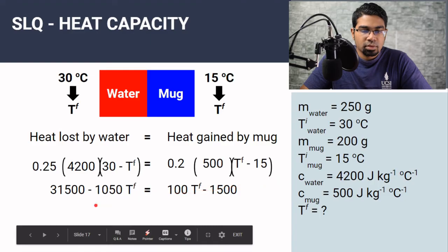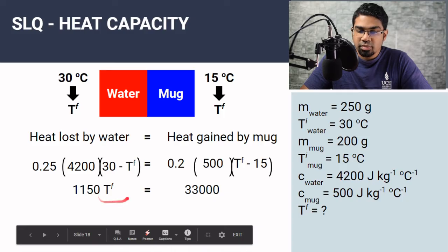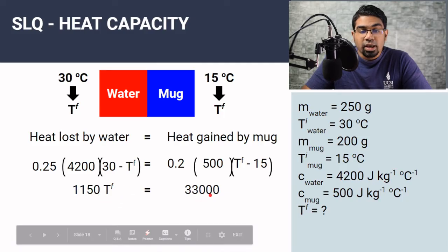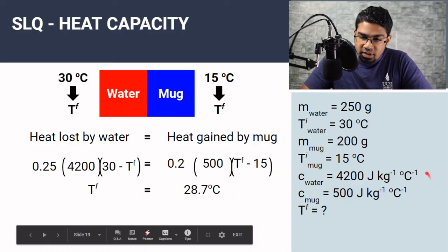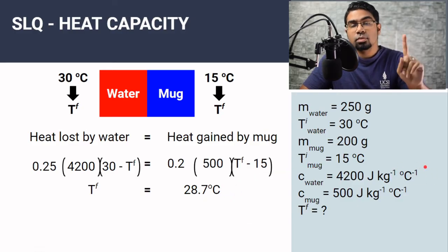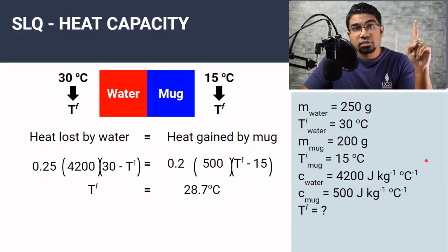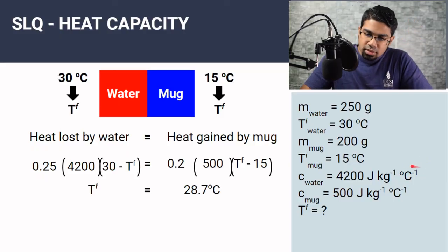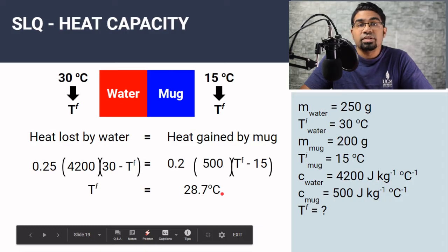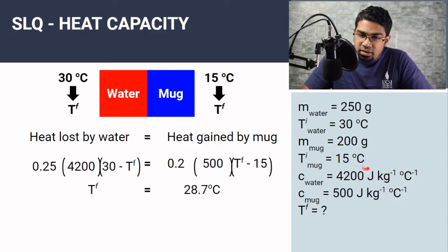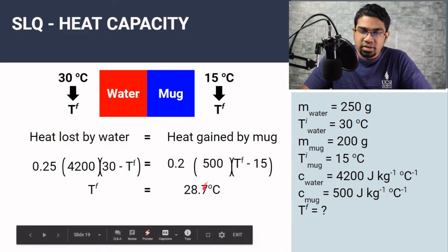When we work it out, we get 1050(30 − Tf) = 100(Tf − 15), which simplifies to 1150·Tf = 33,000, giving a final temperature of 28.7 degrees Celsius. The temperature must be in degrees Celsius here — not because of the specific heat capacity unit (which can be per degree Celsius or per Kelvin, they're the same) — but because our initial temperatures were given in degrees Celsius, so the final temperature will also be in degrees Celsius.